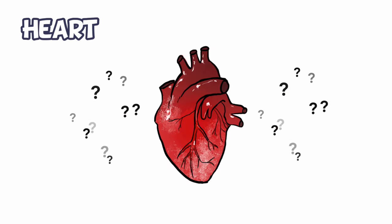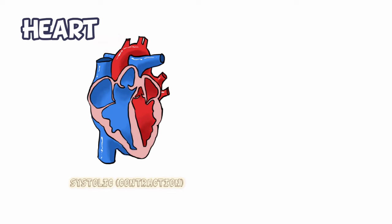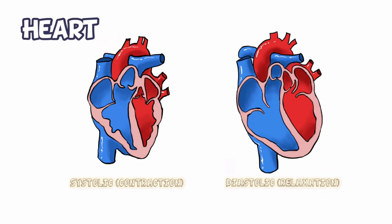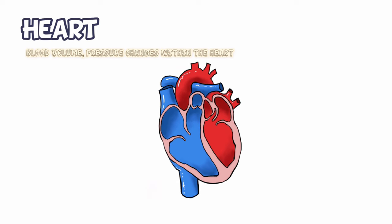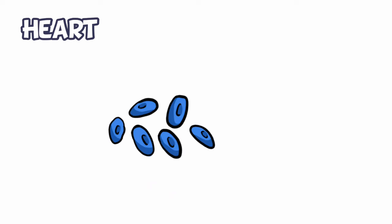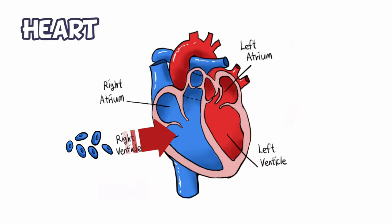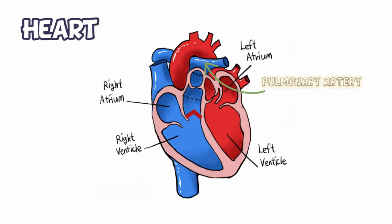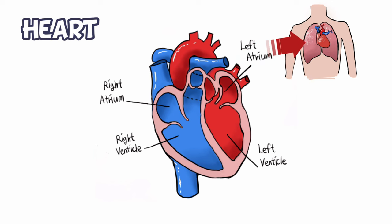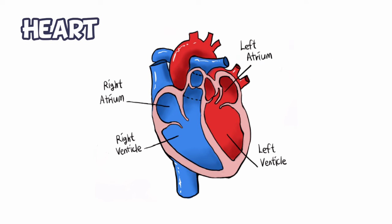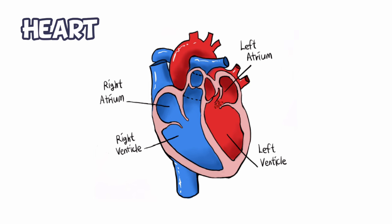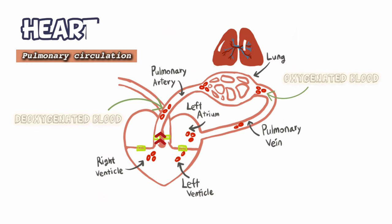So, how does the heart function? The cardiac cycle includes a description of the systolic contraction and diastolic relaxation activities of the atria and ventricles, the blood volume and pressure changes within the heart, and the action of the heart valves within one complete heartbeat. The deoxygenated blood, pumped by the right ventricle, enters the pulmonary artery and is passed onto the lungs from where it gets oxygenated. The oxygenated blood is then carried by the pulmonary veins into the left atrium. This pathway constitutes the pulmonary circulation.